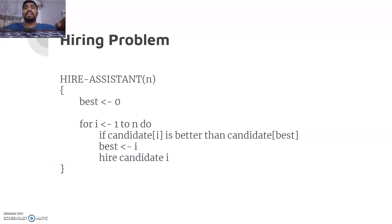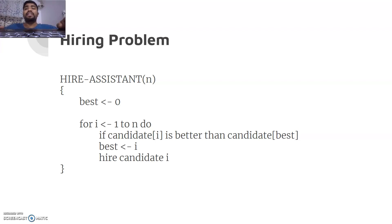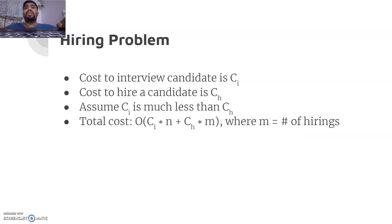Let's understand the algorithm. In 'Hire-Assistant', passing n candidates, best is initialized to zero at the start because I have no office staff. The first candidate who comes will obviously be better than no staff, so I hire him. The next candidate who comes - if he's better than the current one, I make him the new best candidate and hire him, letting go of the old candidate. There is a cost associated with letting go of the old candidate and hiring the new one.